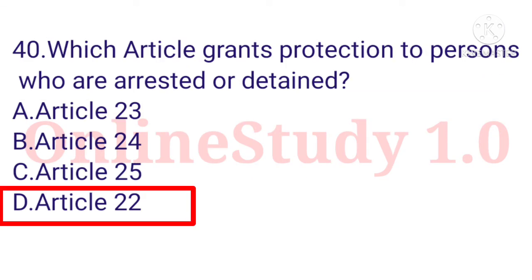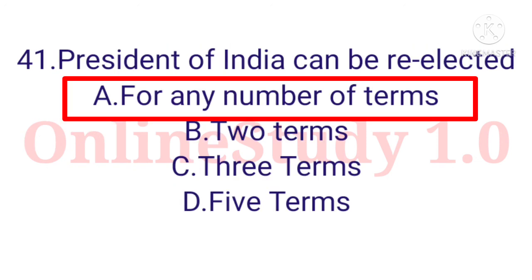Question number 40: The article that grants protection to persons who are arrested or detained is option D: Article 22. Question number 41: The President of India can be re-elected — how many times?